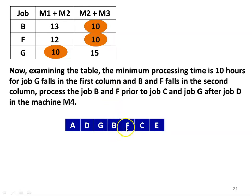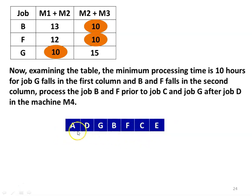The optimal sequence is: A, D, G, B, F, C, E. This is the sequence for processing the jobs in machines M1, M2, and M3.